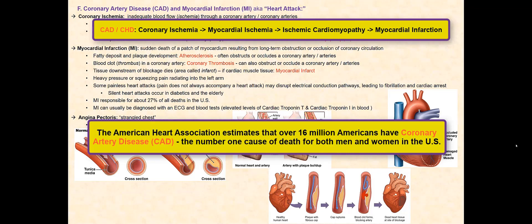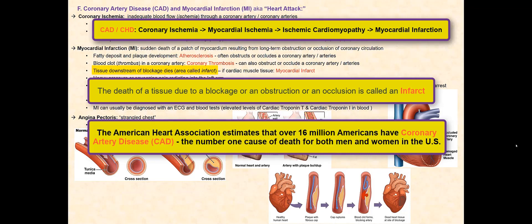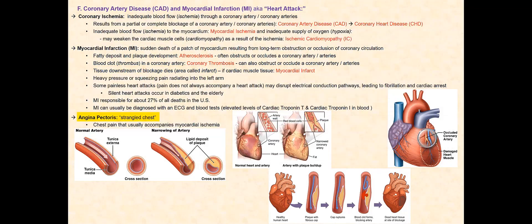If the myocardial ischemia is left untreated, the weakened cardiac muscle fibers can die. The death of a tissue due to a blockage or occlusion is called an infarct. Since the tissue that dies is the myocardium, this is called myocardial infarction, MI, commonly known as a heart attack. Chest pains, called angina pectoris, usually accompany myocardial ischemia, which can potentially lead to myocardial infarction. Unfortunately, not everyone experiences chest pain and discomfort, so it goes unnoticed until it's too late. This is referred to as a silent heart attack, as seen with diabetics and the elderly.